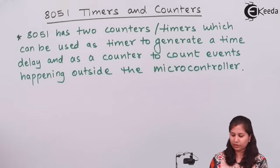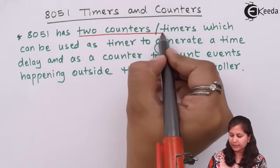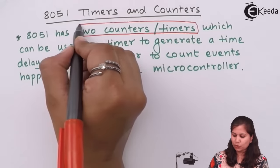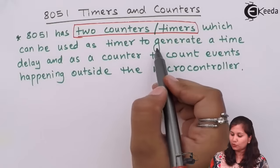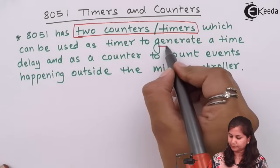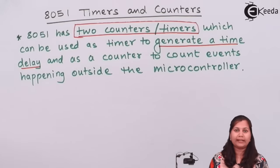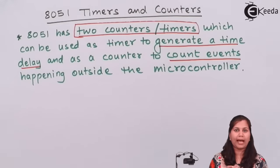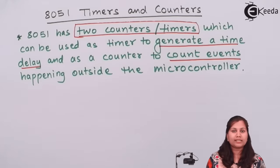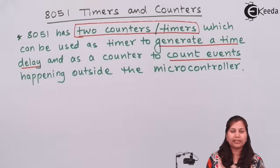The 8051 microcontroller has two counters and timers, meaning these two can act as counters and as timers. When acting as a timer, it is used to generate a time delay, and when acting as a counter, it is used to count events happening outside the microcontroller. So these timers or counters perform two operations: either generate a time delay or count the number of events.